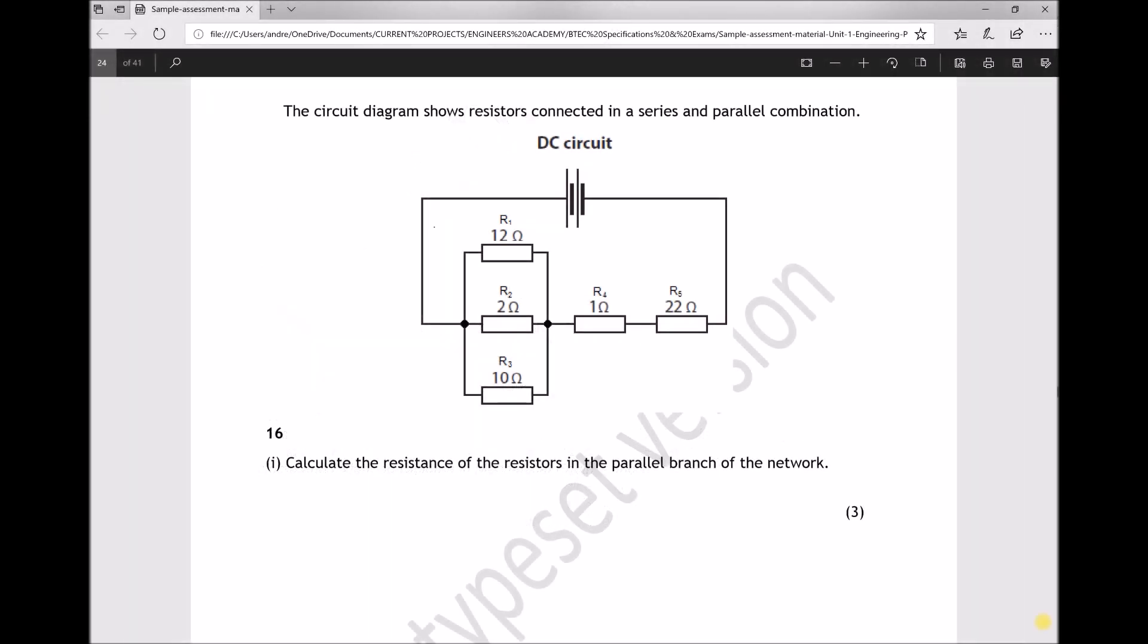Question 16 states the circuit diagram shows resistors connected in a series and parallel combination. The first part of the question asks us to calculate the resistance of the resistors in the parallel branch of the network.